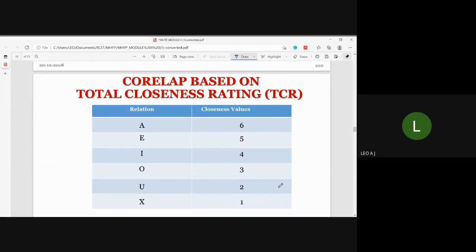CORELAP is based on Total Closeness Rating (TCR). The placement is based on closeness values: A represents absolutely necessary closeness with value 6, E represents especially necessary with value 5, I represents important closeness with value 4, O represents ordinary closeness with value 3.